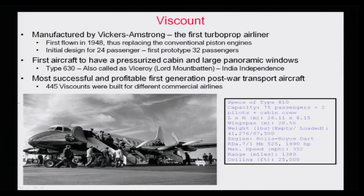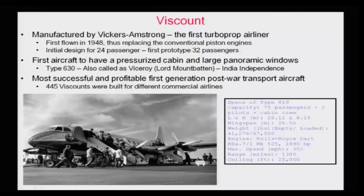This aircraft has its significance with respect to Indian independence. In most independence pictures of India, you actually see the Vickers Viscount, or the Vickers Armstrong turboprop aircraft. This aircraft has great importance in the commercial aviation field. It is the first turboprop aircraft and the first aircraft used as an airliner to transport people from one location to another. It was flown in 1948 and replaced conventional piston engines with turboprop engines. It was initially designed for 24 passengers, later upgraded to 32. In Indian independence, you can see Lord Mountbatten getting out of this aircraft as the last Viceroy of India.